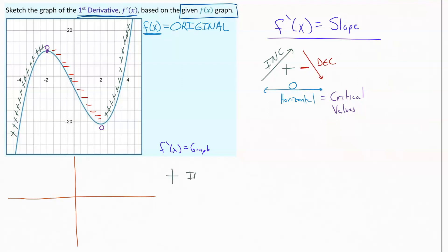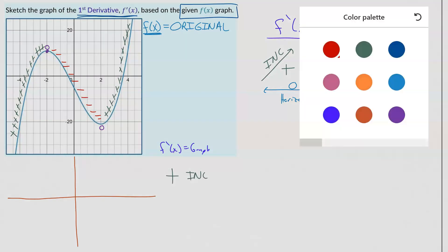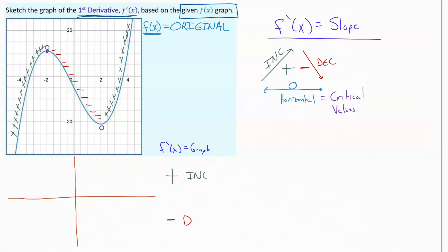So positive, again, would be where it's increasing. Negative would be where it's decreasing. And then the zeros, those critical values, those are going to be right on the actual x-axis because the slope value is zero there. So they're the easiest point to mark.